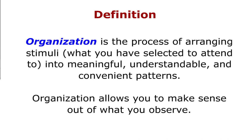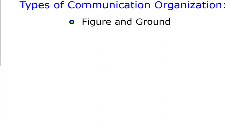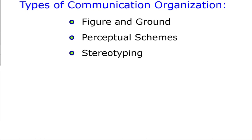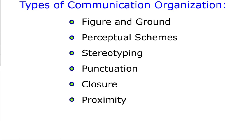Organization allows you to make sense out of what you observe. There are seven types of communication organization: Figure and Ground, Perceptual Schemes, Stereotyping, Punctuation, Closure, Proximity, and Similarity.